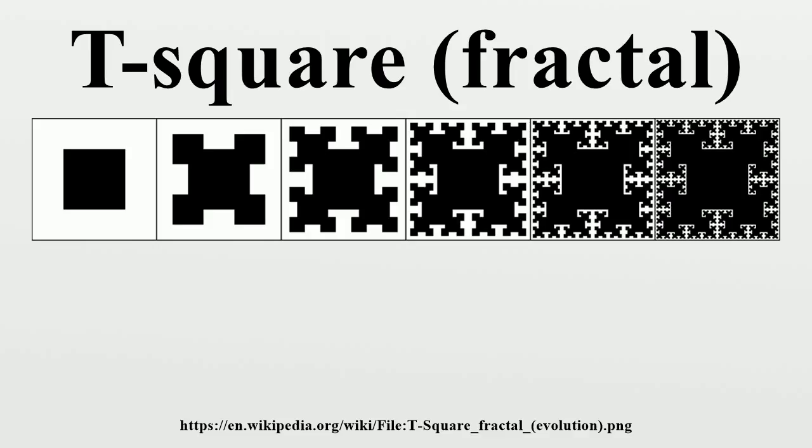At each convex corner of the previous image, place another square, centered at that corner, with half the side length of the square from the previous image.